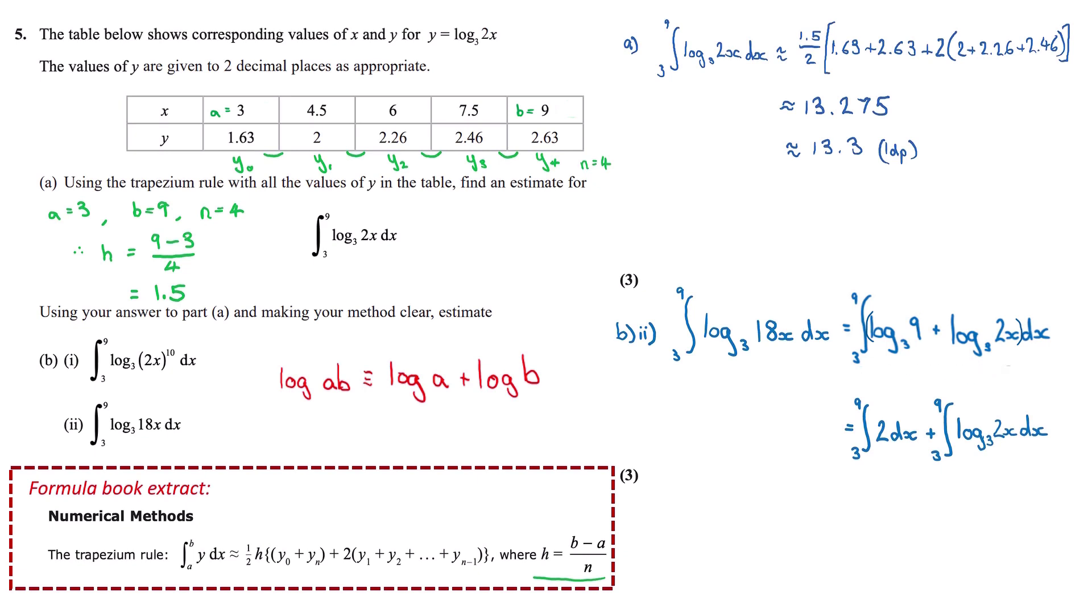Using your calculator, log base 3 of 9 is equal to 2. And then we are adding our log base 3 of 2x dx. Integrating 2 between 3 and 9, this can be typed onto our calculator, gives us a value of 12 plus our estimated value of 13.3, gives us an estimated answer of 25.3.